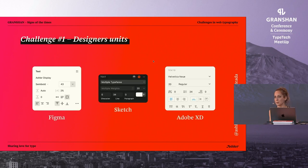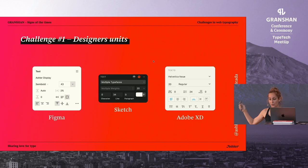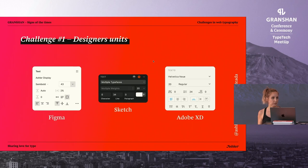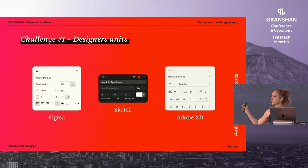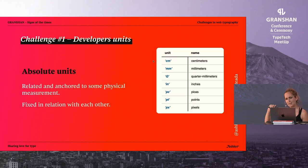For designers, it's super easy because in user interface design, the programs we use — Figma, Sketch, and Adobe XD — we always work with pixels. We set everything in pixels: the screen size, width and height of shapes, margins, paddings, everything is set in pixels. Even the text panels represent pixels, although they're not a direct word. They say they are pixels. But as developers, we have a lot of different units we can use.